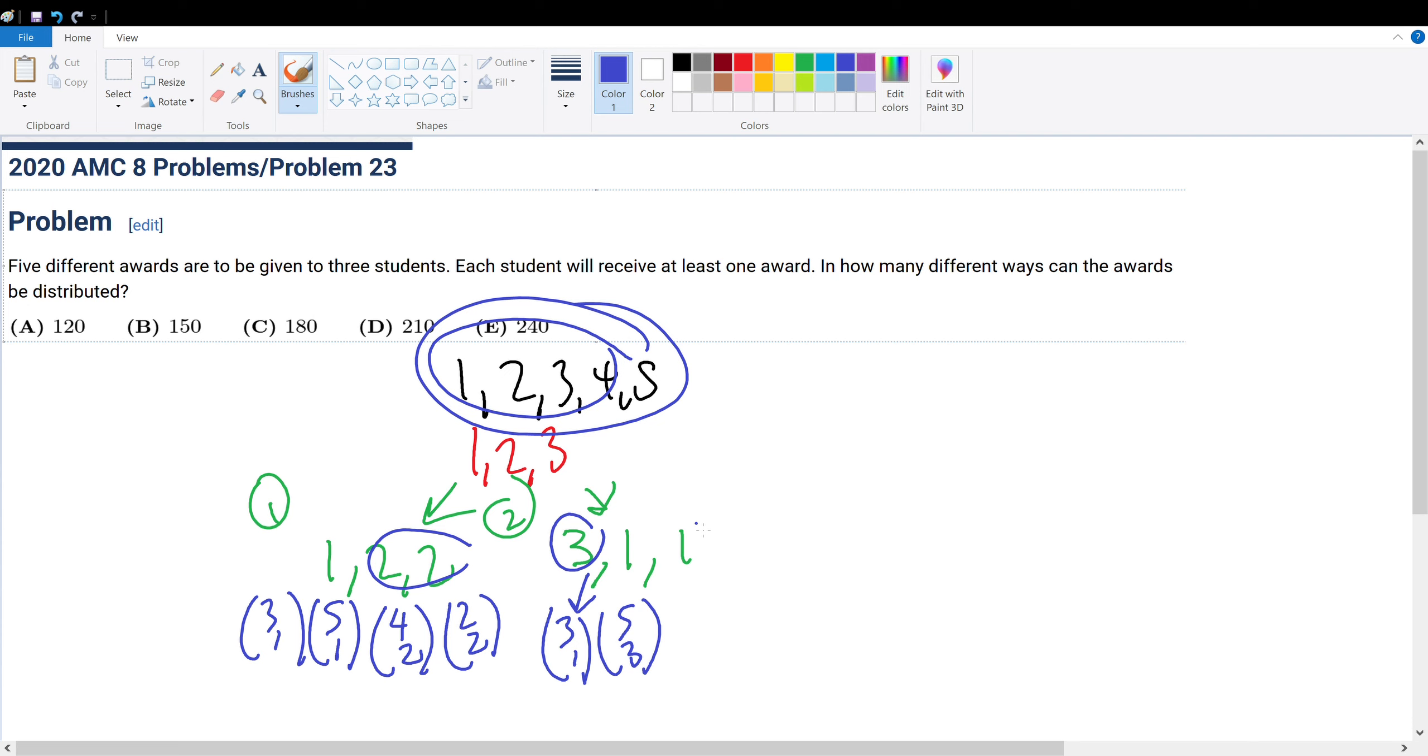Now that we see this, now that he has taken three prizes out of the total pool of five prizes, how many ways are there to give two prizes to two students? Well, that's just two ways.